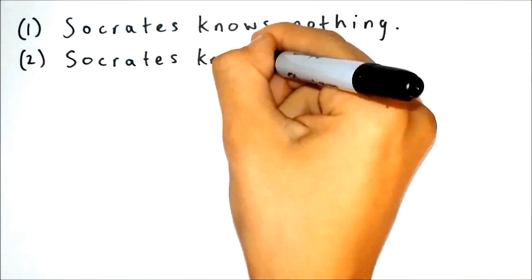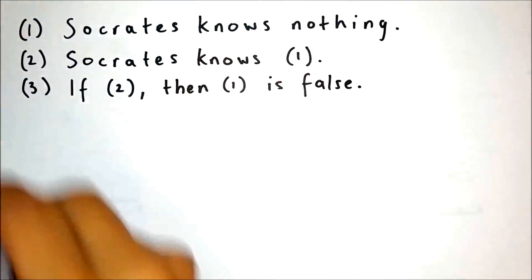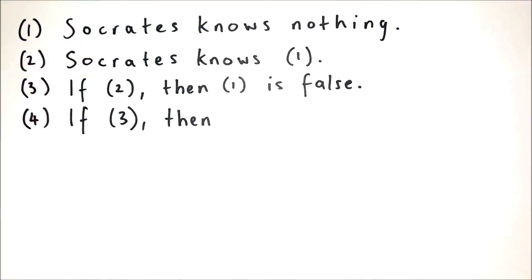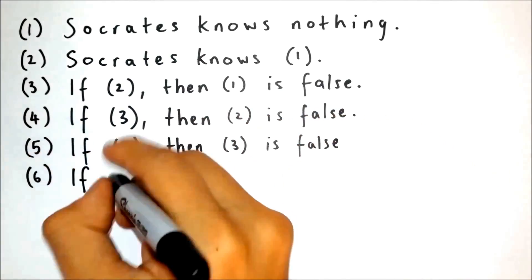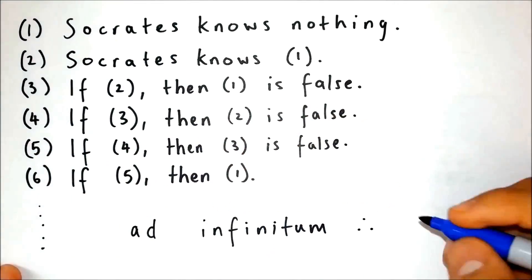If Socrates does indeed know that he knows nothing, then he knows something. But he can only know something if he does indeed know nothing. Therefore, Socrates does and does not know nothing.